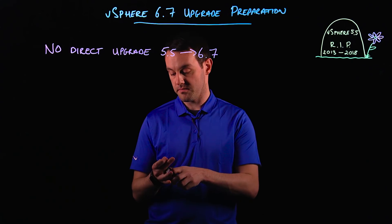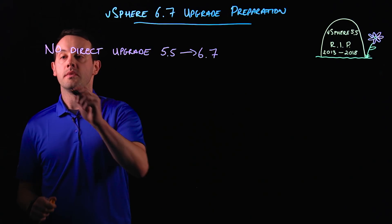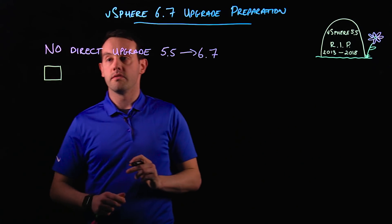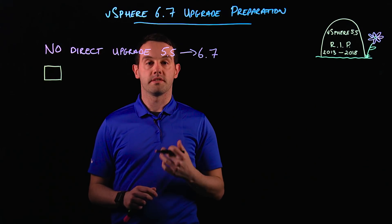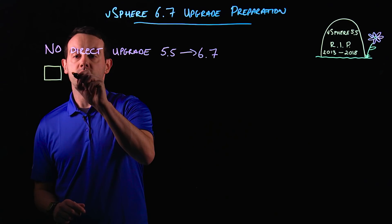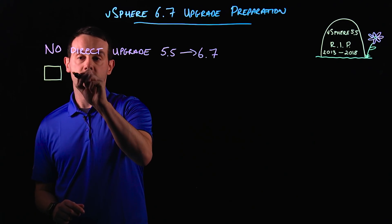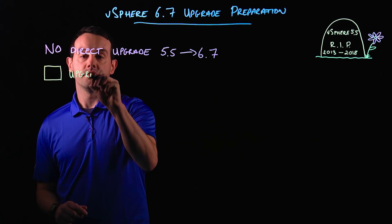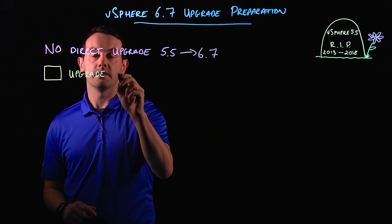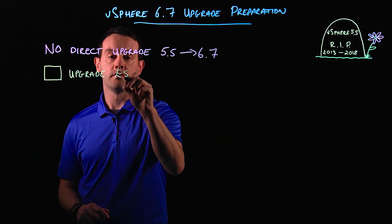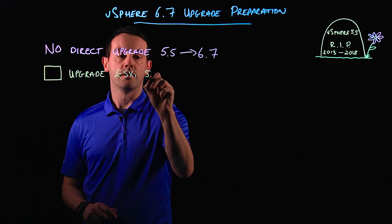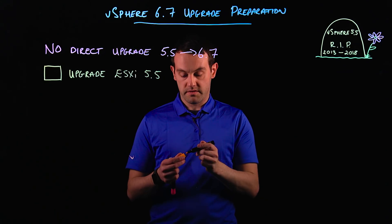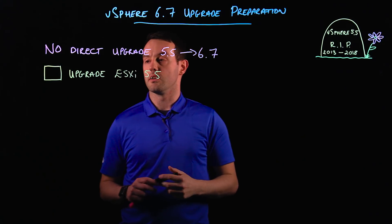So let's jump into it. We'll assume you're running either vSphere 6.0 or 6.5, but you may have some ESXi 5.5 hosts in your environment. The first thing you need to do is upgrade any remaining ESXi 5.5 to a minimum of 6.0 or 6.5, depending on what version of vSphere you're currently running.